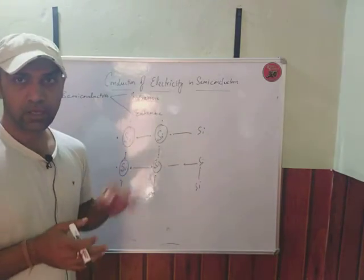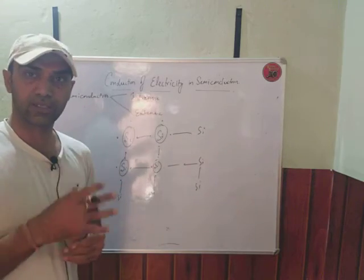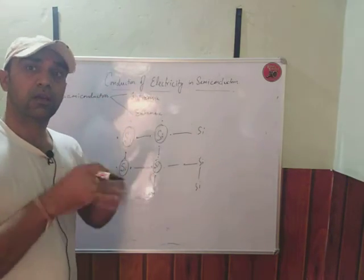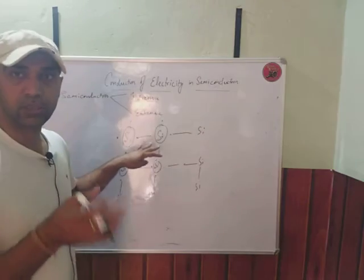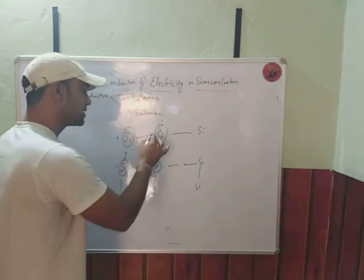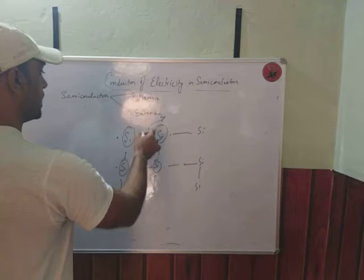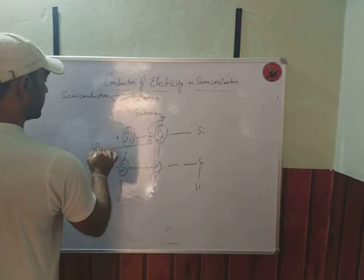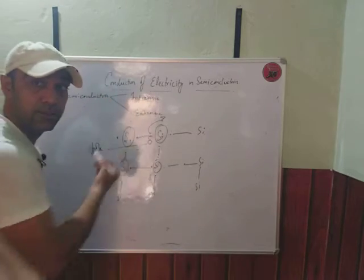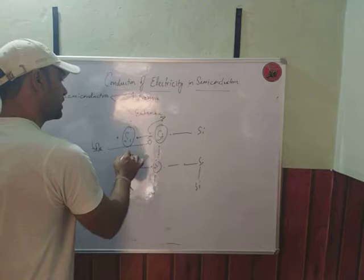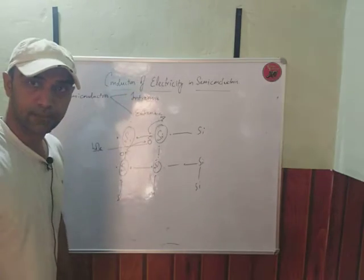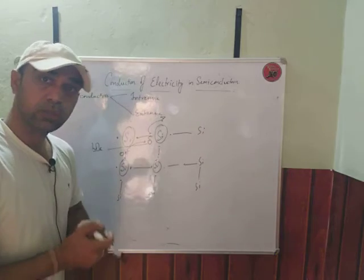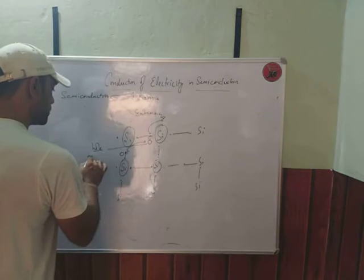When you apply energy in the form of heat, some electrons jump from their positions — the covalent bonds get broken down. The electrons which were held in those bonds jump away, and where they leave, a hole is created. This electron travels through the crystal lattice. Holes are considered as positive charge carriers; electrons are negatively charged.